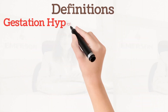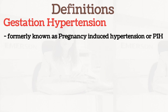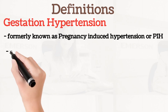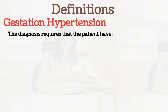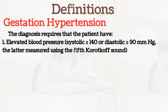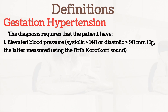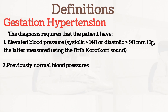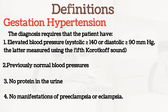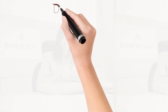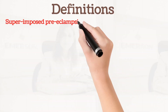Gestational hypertension, formally known as pregnancy-induced hypertension or PIH, is new onset hypertension which develops after 20 weeks gestation. You can diagnose gestational hypertension when: first, there is elevated blood pressure greater than 140 over 90; second, the patient should have had no prior history of hypertension; third, no protein in urine; and fourth, no manifestation of pre-eclampsia or eclampsia.